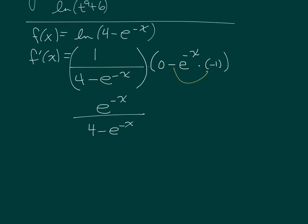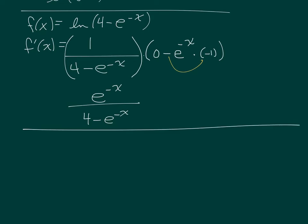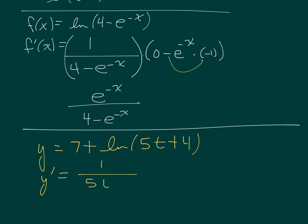The last one, just to keep this the same as the other video: y equals 7 plus ln of 5t plus 4. The derivative of a log is 1 over what's in the parentheses times the derivative of what's in the parentheses. You can see this way is a lot faster, but some students like the substitution — y equals the outside, u equals the inside, take derivatives of both, multiply, substitute back. So you just need to choose which one you like better and stick to it.